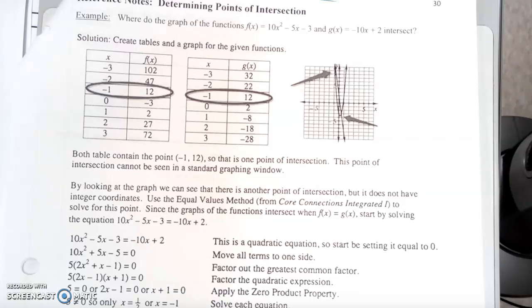From there, it was easily factorable. They found the GCF, obviously 5. Then they took this trinomial and factored it here and here, set each of them equal to 0, and you come up with 1 half and negative 1.